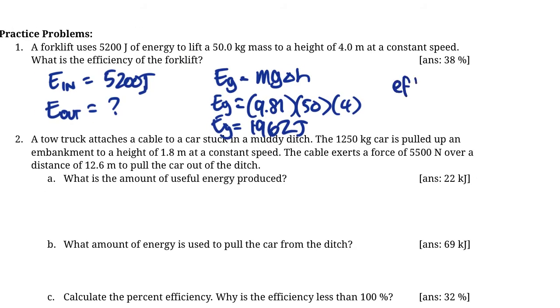So we can calculate our efficiency. Efficiency equals 1962 over 5200. The joules cancel out. When we convert this to a decimal, it's going to be 0.3773. Or if we round that to the nearest percent, 38% efficient.